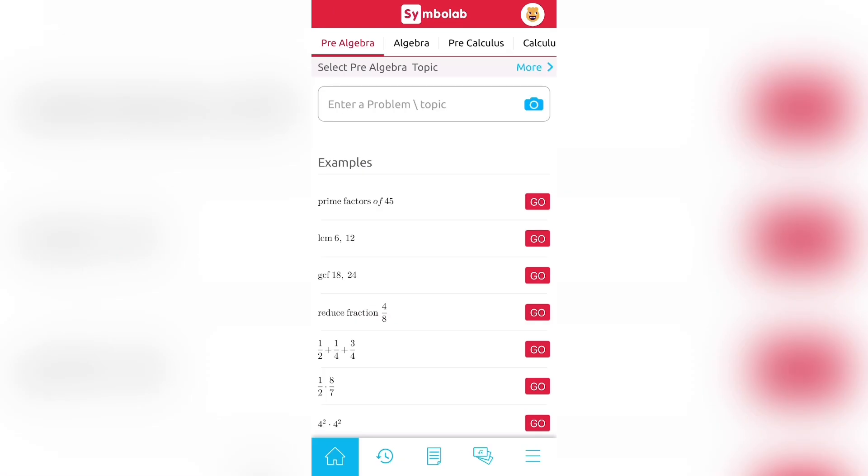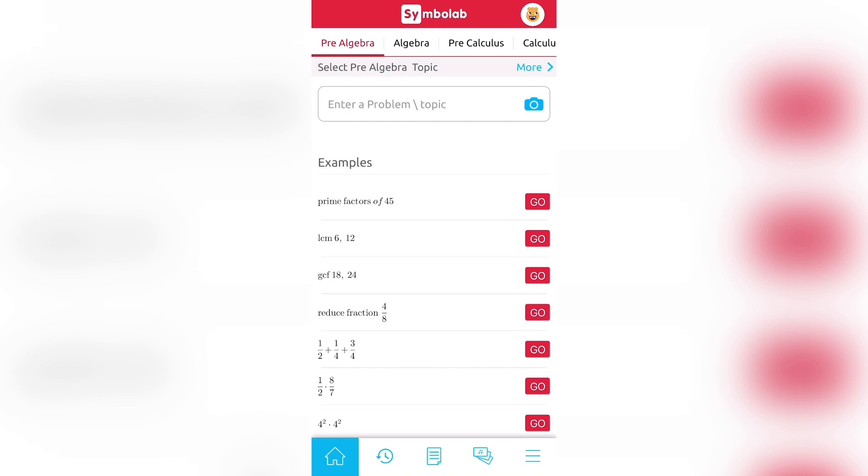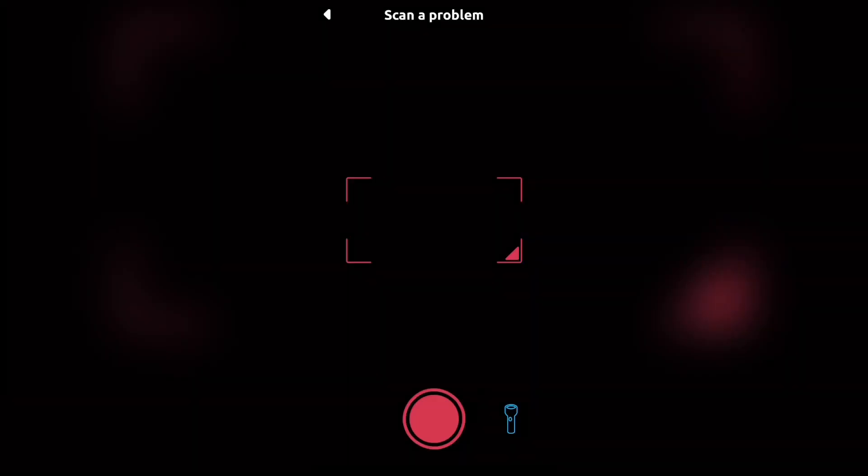So if you do want to simply enter in an equation, you can go ahead and click that bar. But one of the best features on the app is this camera feature. As you can see, right over here, there is a camera button. If you go ahead and click that it will open a camera.